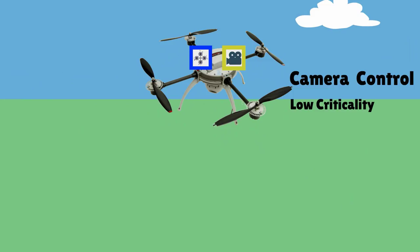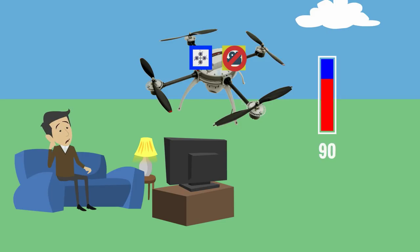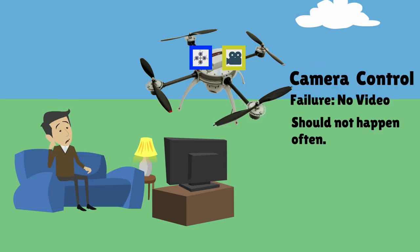The camera system is a low criticality system. When capturing high definition videos, the camera system heats up significantly. When a certain temperature threshold is reached, the camera system has to be turned off for a short while to cool down, before it can be turned on again. If the camera system fails, we have no video for a while. This is acceptable as long as it does not happen too often.